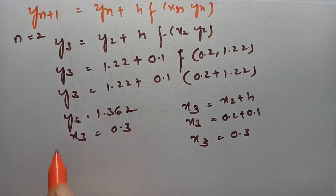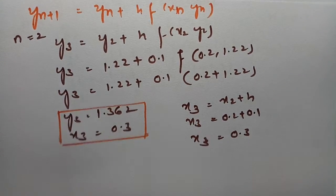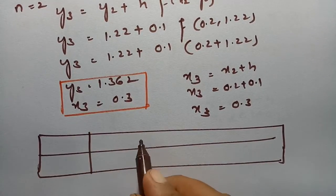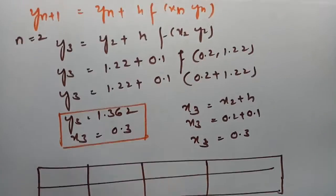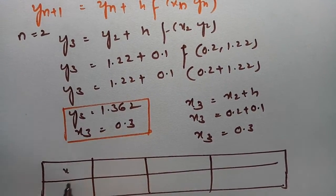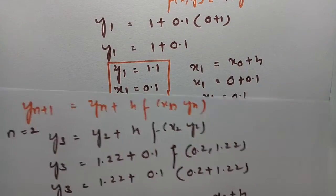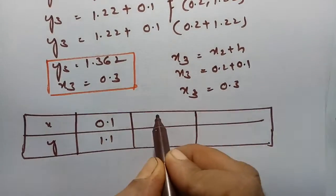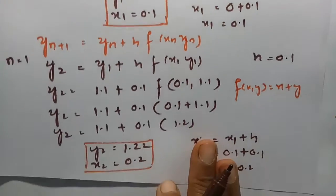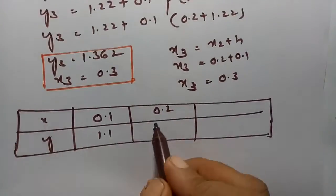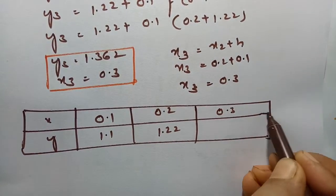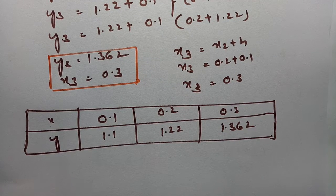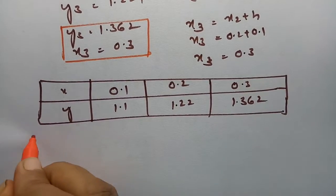After getting all these values, I'll put them in a table. For x = 0.1, y_1 = 1.1; for x = 0.2, y_2 = 1.22; for x = 0.3, y_3 = 1.362. Now we have to compare with the exact solution.